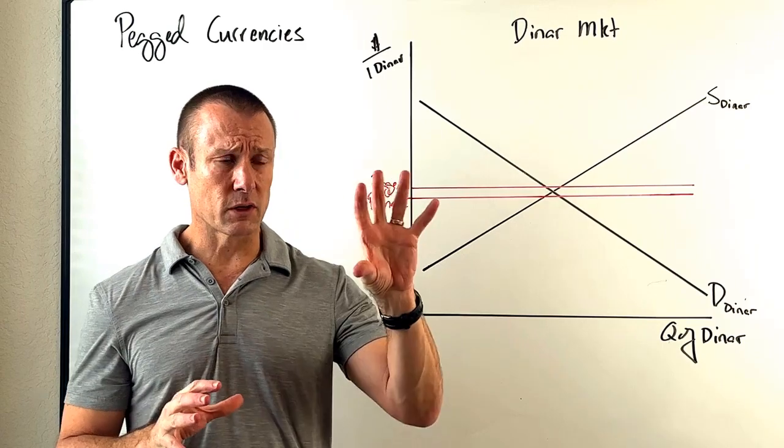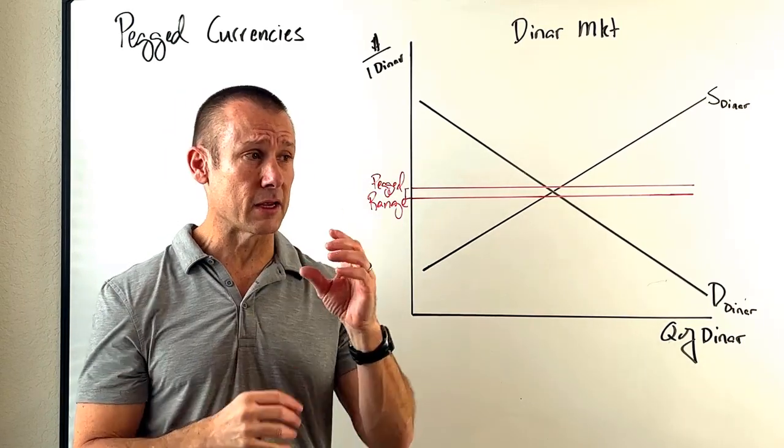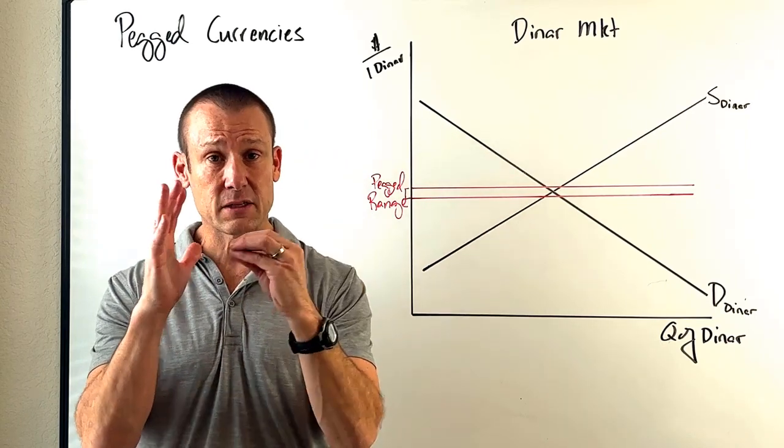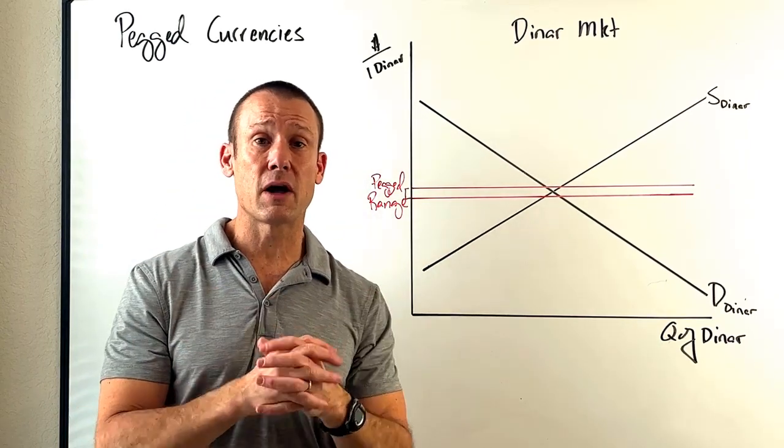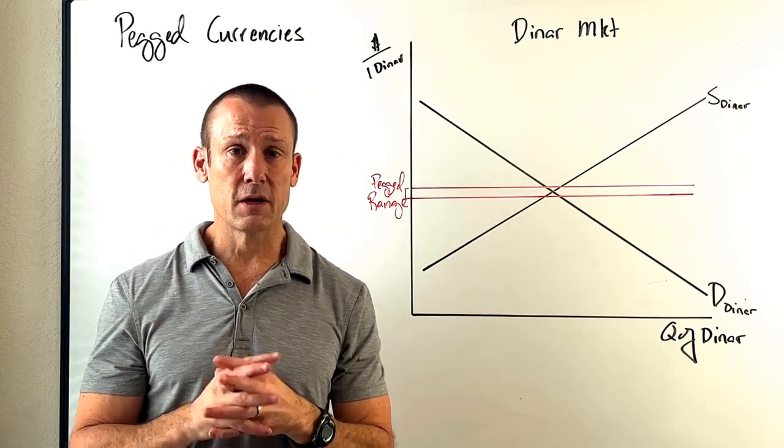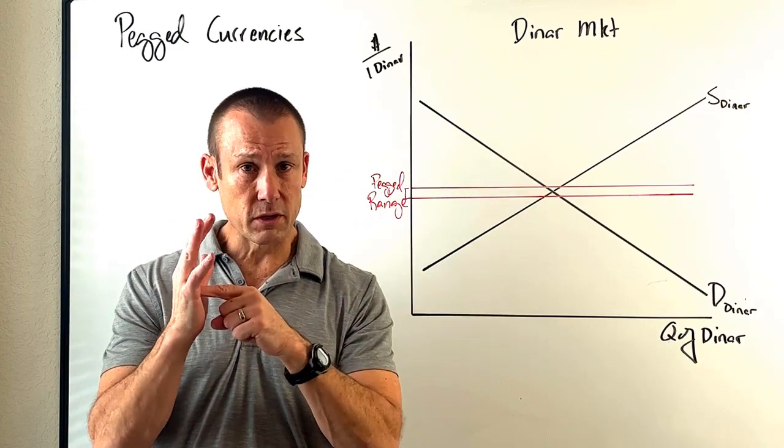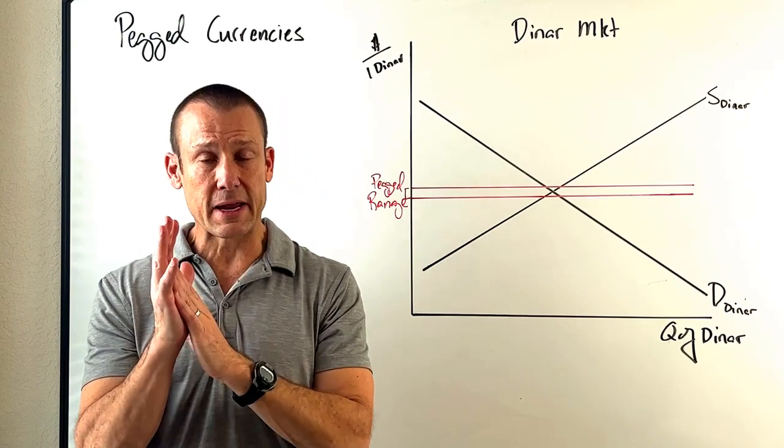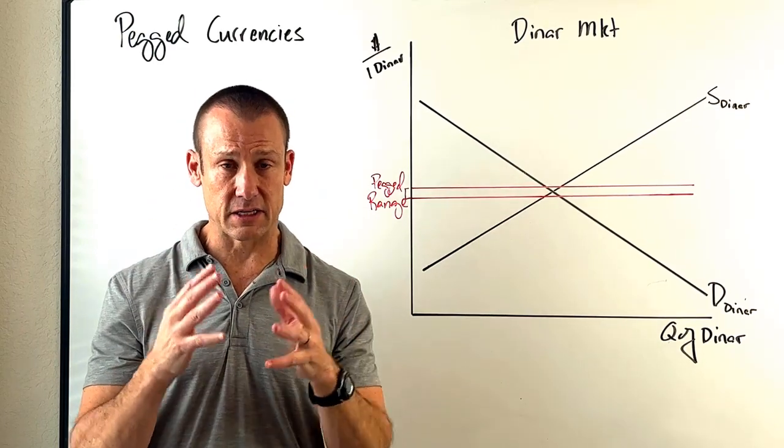So a fixed exchange rate is when a country says to the rest of the world, hey, you can exchange my currency for gold at some fixed amount. Think $35 to an ounce of gold. That's a fixed conversion rate between the dollar and gold.